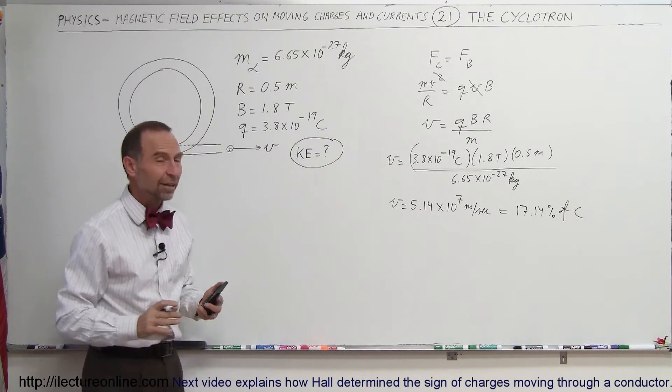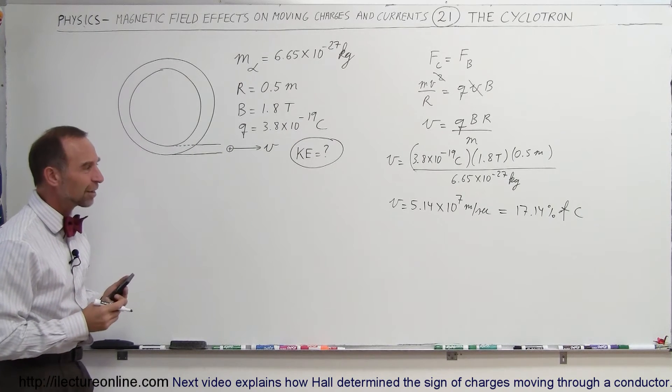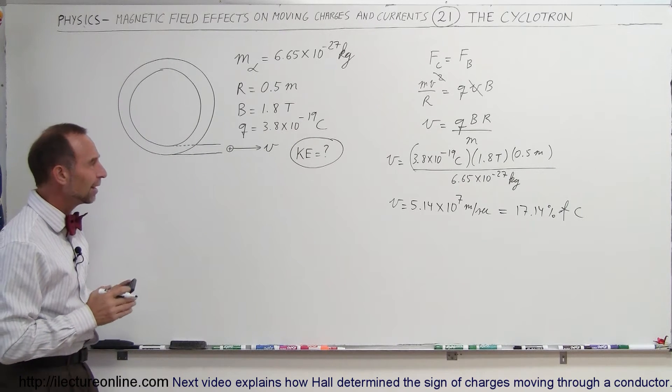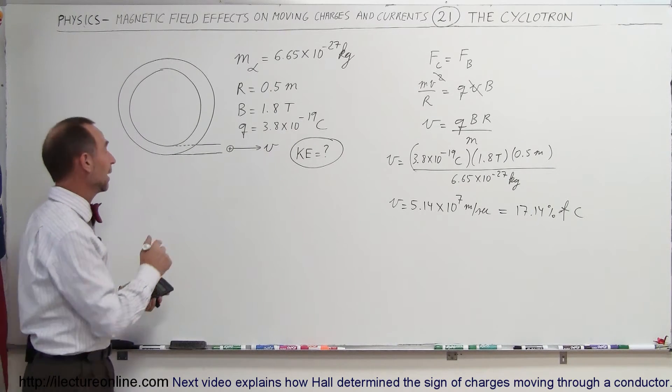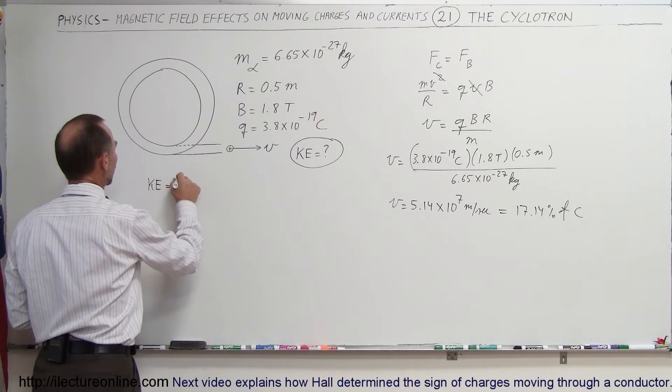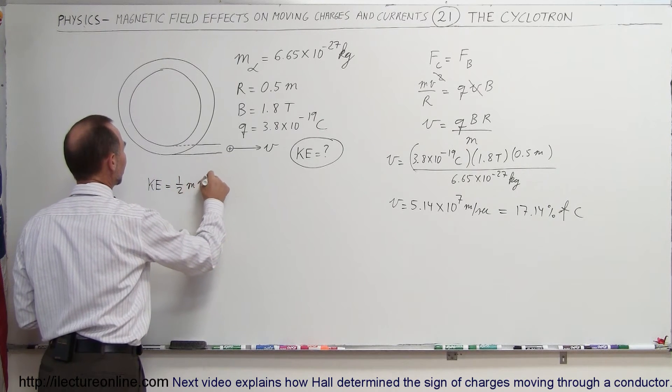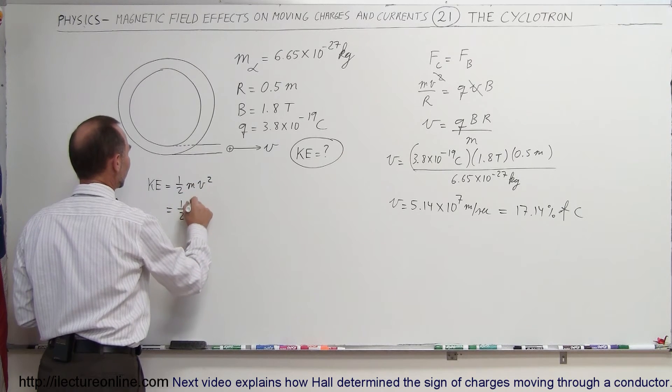And now you might think, does that have some relativistic effects here? We'll see in just a moment. Let's find the kinetic energy of a particle like that. We know that the kinetic energy is equal to 1 half mv squared. So that's equal to 1 half times the mass.